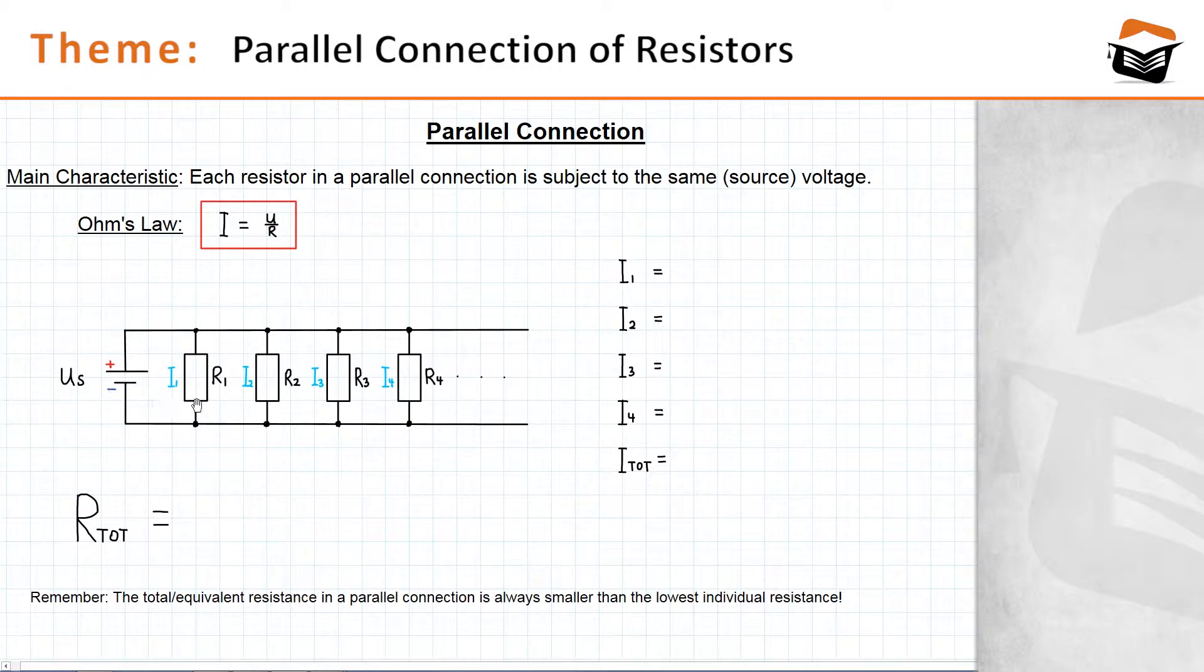In this example, we have four resistors R1, R2, R3 and R4. We could have more if we needed to. And all of these resistors are connected to the wires that are directly connected to the source voltage, US.